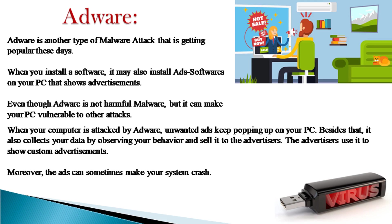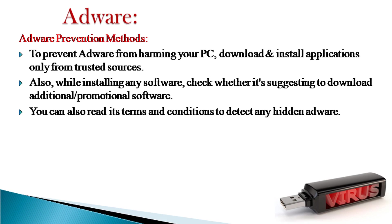Adware is another type of malware that is getting popular these days. When you install software, it may also install ad software on your PC that shows advertisements. Even though adware is not harmful malware, it can make your PC vulnerable. When your computer is attacked by adware, unwanted ads keep popping up. Besides that, it also collects your data by observing your behavior and sells it to advertisers, who use it to show custom advertisements. To prevent adware, download and install applications only from trusted sources. While installing any software, check whether it is suggesting downloading additional or promotional software.